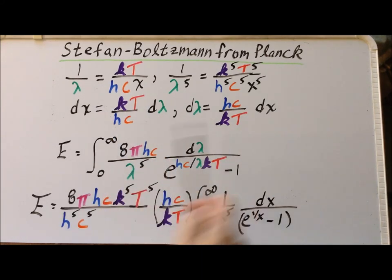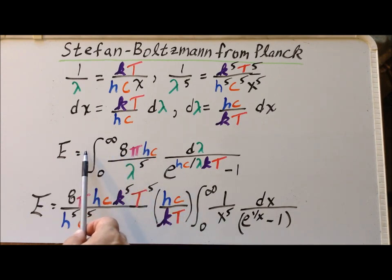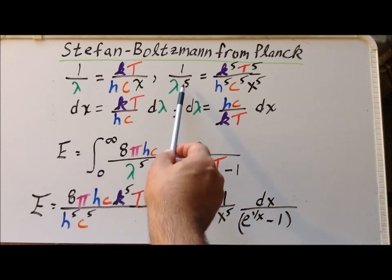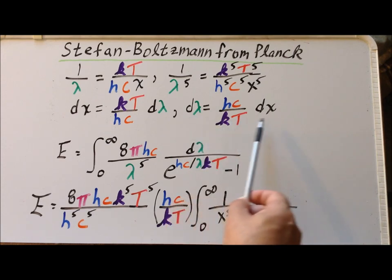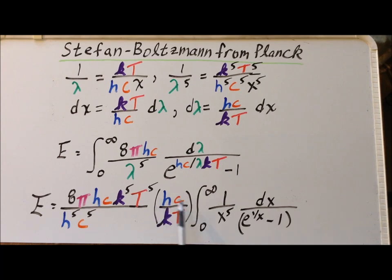Now we can apply all our substitutions. First, we realize that the 8πhc can be pulled in front of the integral sign. We had our substitution for 1 over λ to the fifth, so that gives us k to the fifth, T to the fifth, over h to the fifth, c to the fifth. In our substitution for dλ, it's going to be hc over kT times dx. We can pull the hc over kT in front of the integral, and we're left with the integral from 0 to infinity of 1 over x to the fifth dx over e to the 1 over x minus 1.